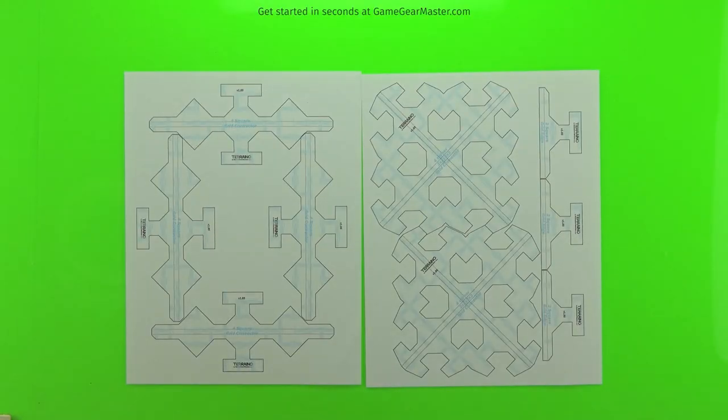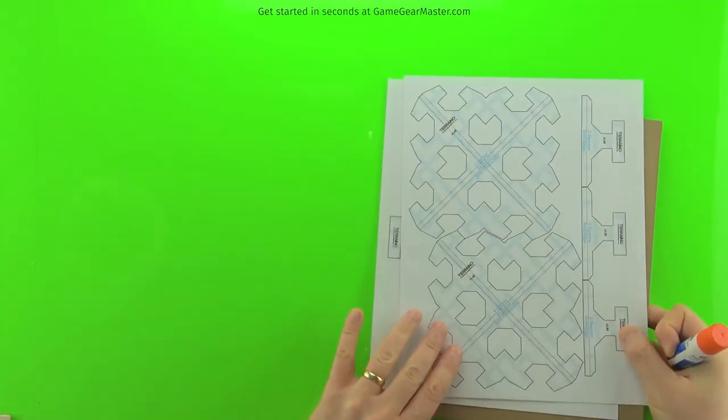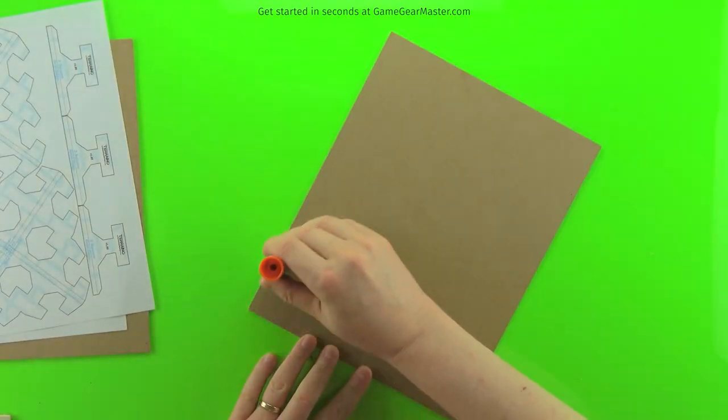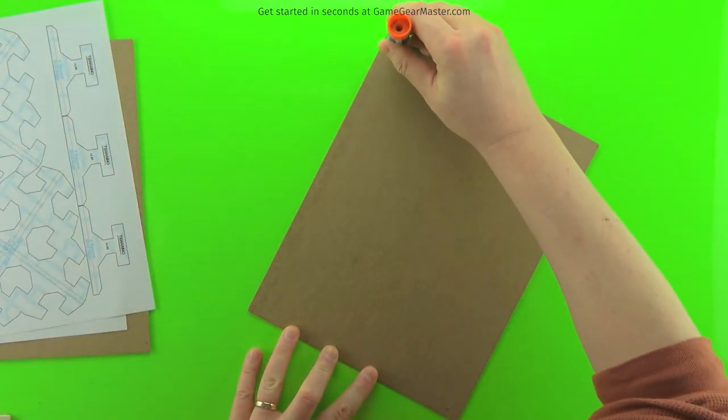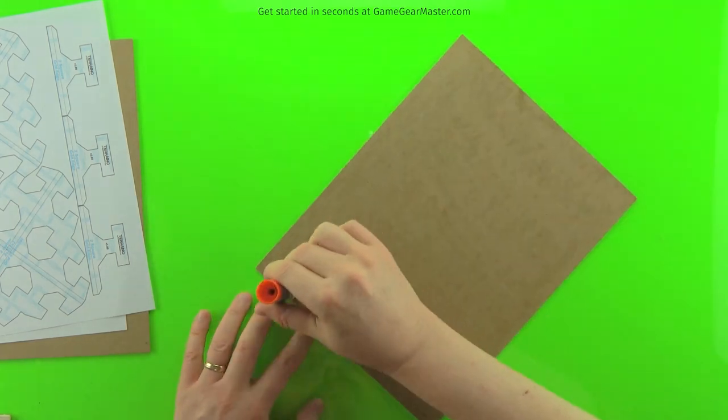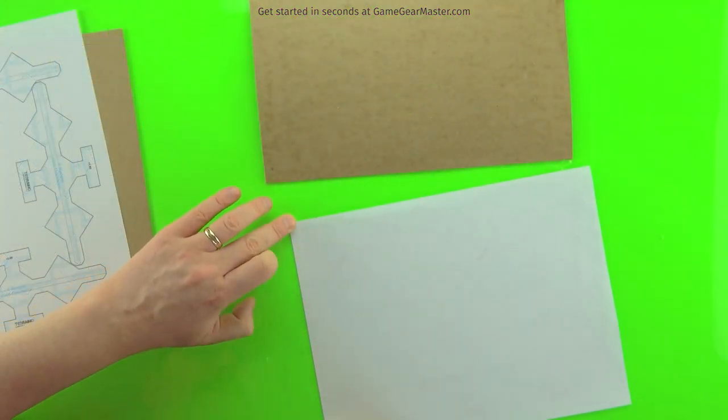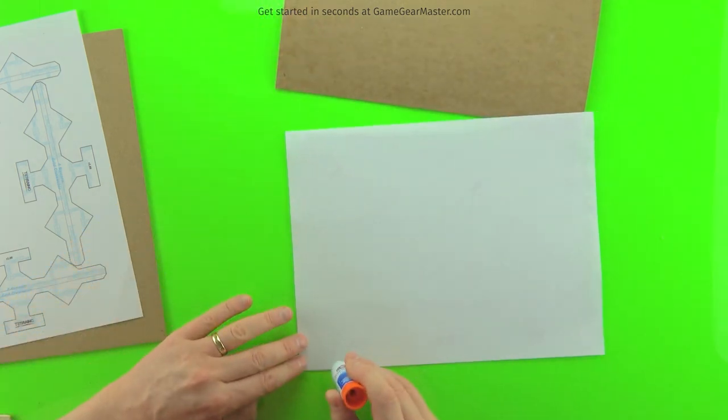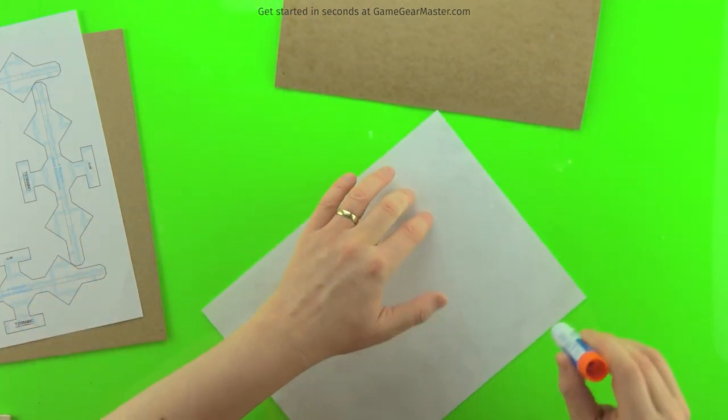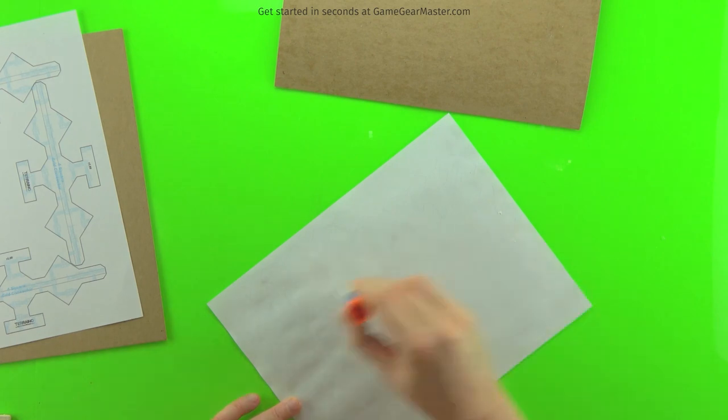Grid square connectors have a lot in common with templates in that they're printed out and then glued onto cardboard. That actually creates the base of the connector itself and makes it a lot easier for you to create these pieces. Instead of printing out a template and then tracing it on and making these complex shapes, you just print out the piece itself and glue it onto cardboard.